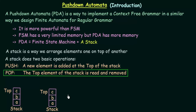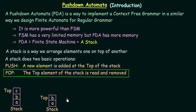Performing Pop once more: the top-most element C is removed, and B becomes the new top-most element. Those are the two basic operations performed by a stack — Push and Pop. This stack will be used to implement our Pushdown Automata.